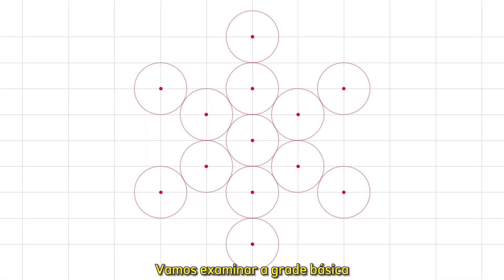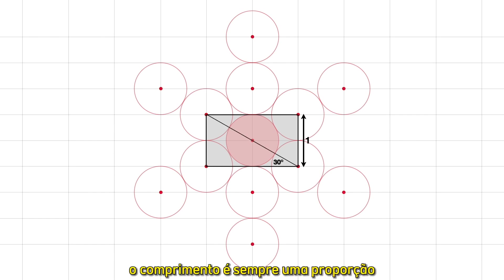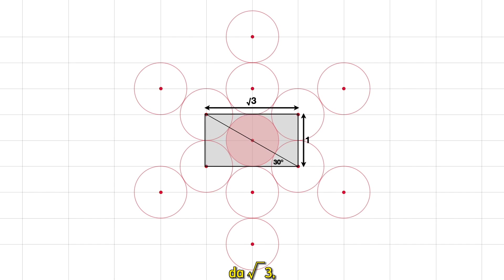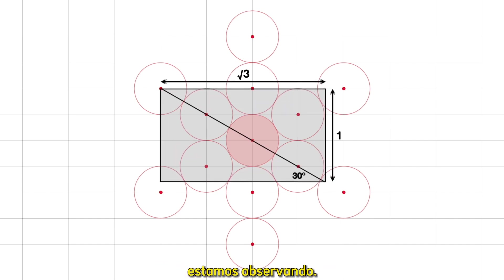Let's examine the basic grid connecting these circles, or spheres, with the unit diameter 1. Since this angle is 30 degrees, the length is always a ratio of root 3, no matter what fractal of the grid we're observing.